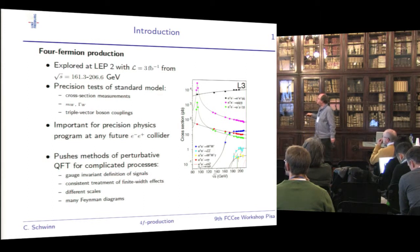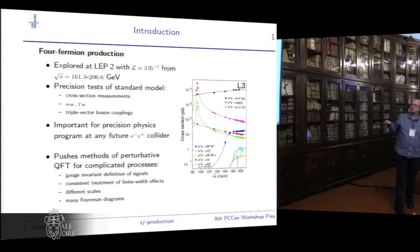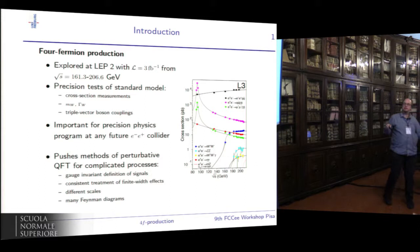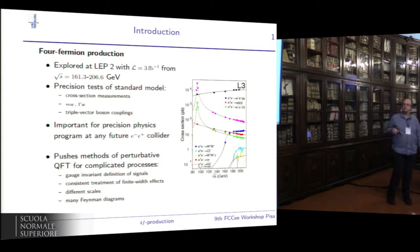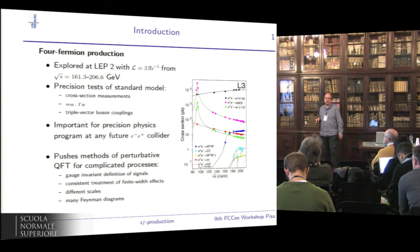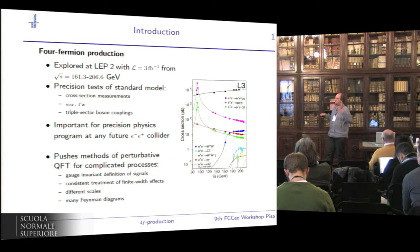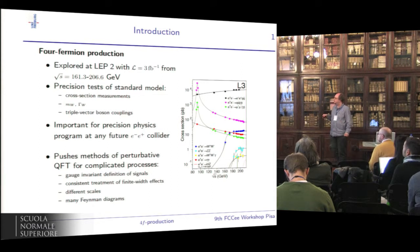The W pair production process has been used to measure the W boson mass and width, and several processes have been used to bound anomalous triple gauge boson couplings. We see the cross-section measured at LEP2: e-plus e-minus to q-q-bar production, the W pair production cross-section rising at threshold, and the decay of the W's leads to a four-fermion signature. Similarly, Z-pair production again leads to a four-fermion signature. This class will be important for any future electron-positron collider, and it has been a driving force for the theory community to push methods of perturbative quantum field theory.